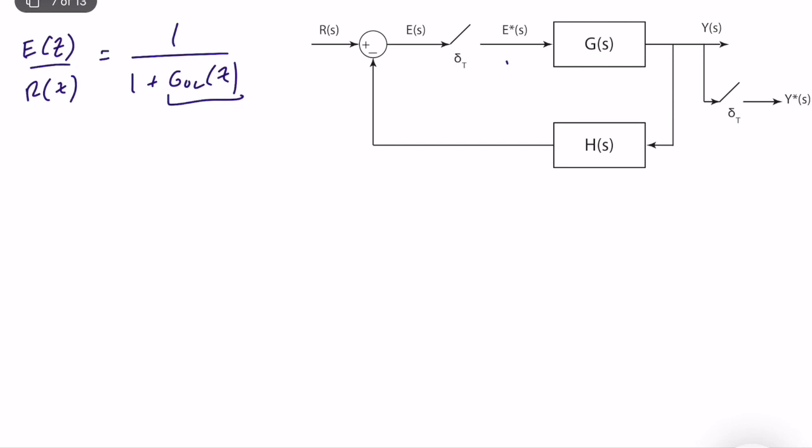We look at this again and try to compute errors for different kinds of input, such as unit step, unit ramp, and unit acceleration. Now we will try to figure out G_OL(z) for different kinds of topologies, which may not be very intuitive or obvious when you first look at that structure. So we have a similar structure here, and let's try to figure out if we can compute it.